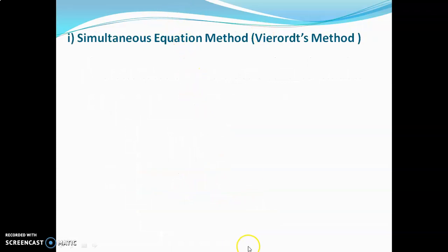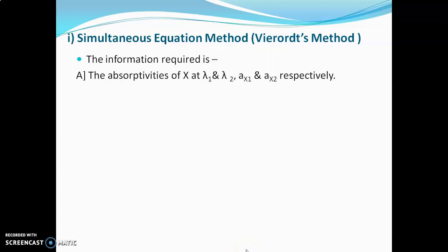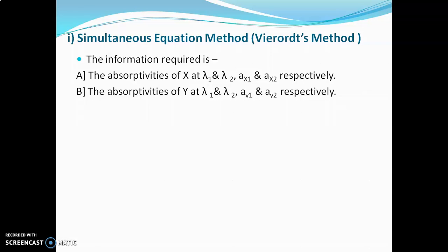For the simultaneous equation method, we require some information. First, we need the absorptivity values of drug X at lambda 1 and lambda 2, which are ax1 and ax2 respectively. To get these, prepare a few dilutions of reference standard drug X and measure the absorbance at lambda 1 and lambda 2. Calculate absorptivity using the formula: absorptivity = absorbance divided by concentration. Similarly, obtain the absorptivity values of drug Y at lambda 1 and lambda 2, which are ay1 and ay2 respectively.